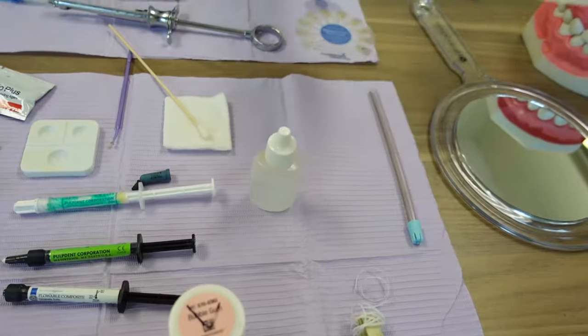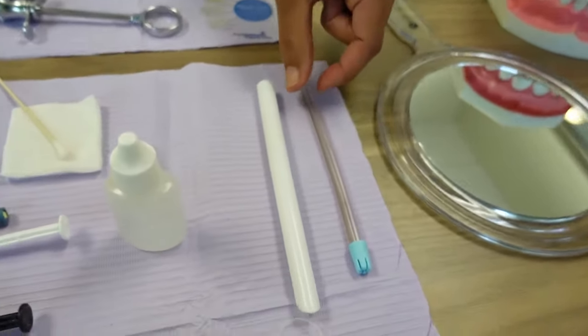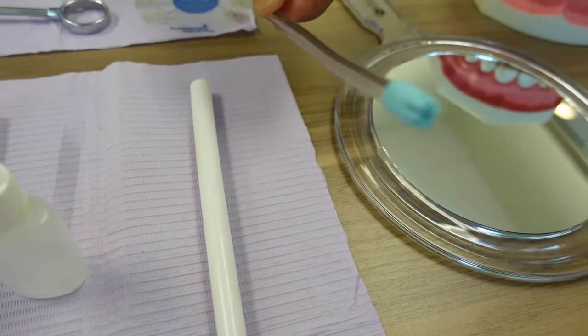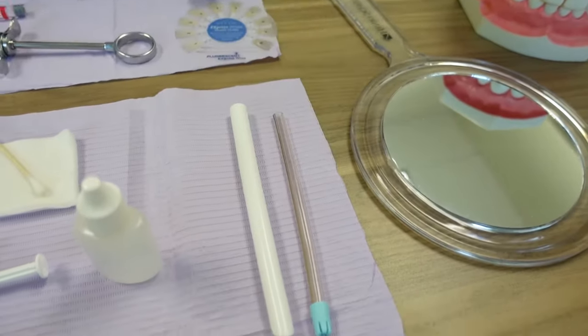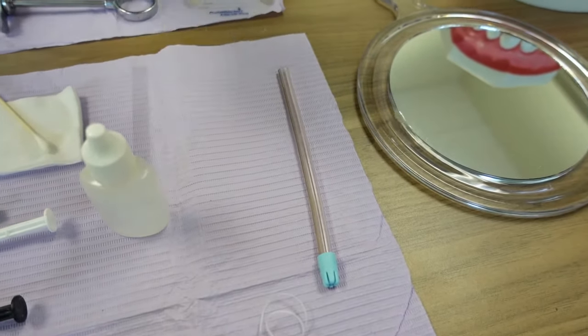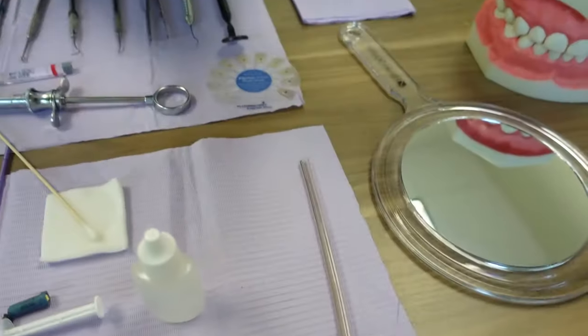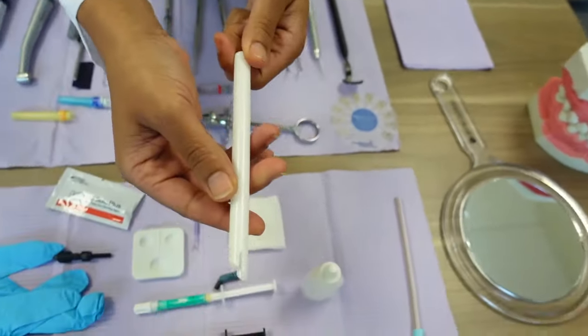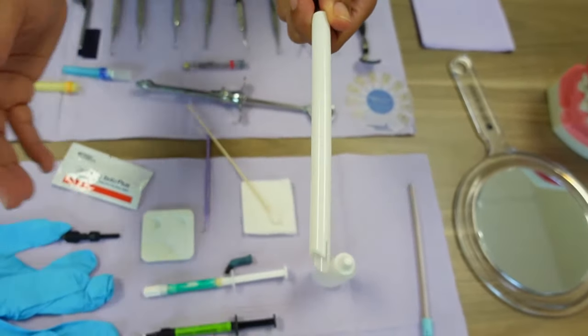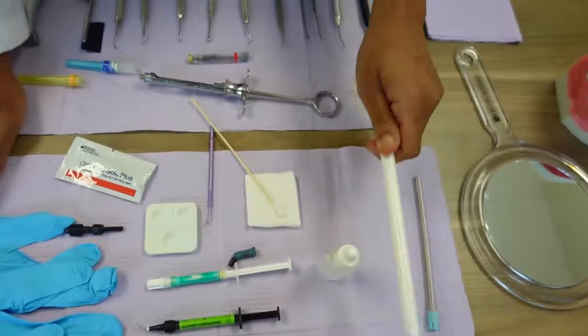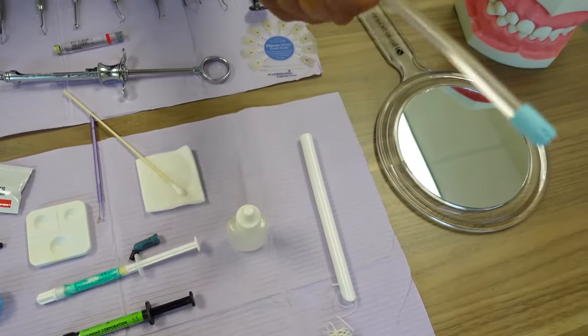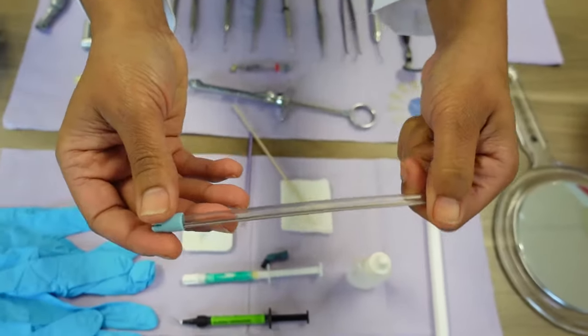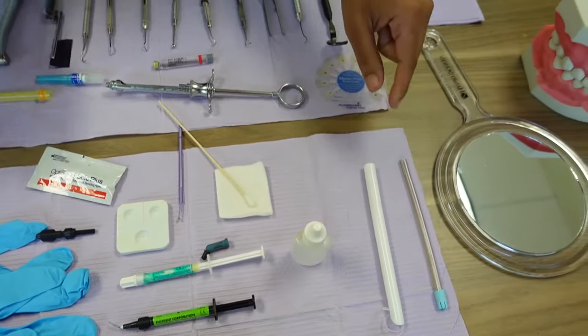This is an HVE—high volume evacuator. This is a saliva ejector. The HVE is used to remove excess debris in the mouth and filling material, anything else that the patient can swallow. The saliva ejector is used to remove saliva.